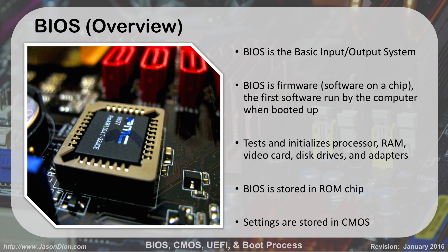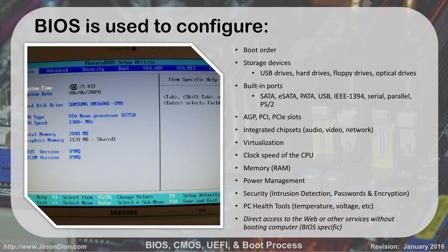It is the first software that's run by the computer when you boot it up. When you turn on the computer, the first thing it does is test and initialize the processor, test the RAM, test your video card, and check your disk drives and adapters. This BIOS is stored in the ROM chip — ROM stands for Read Only Memory. The settings are actually stored in what's called CMOS, which is a type of memory that's more of a permanent storage.